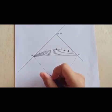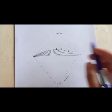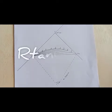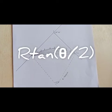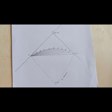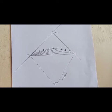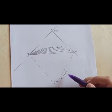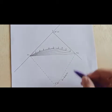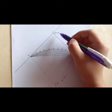To find the tangent length, you need to use this formula, which is R tangent theta divided by 2. In this case, the radius is 600 meter and the theta is 18 degree, 24 minute.